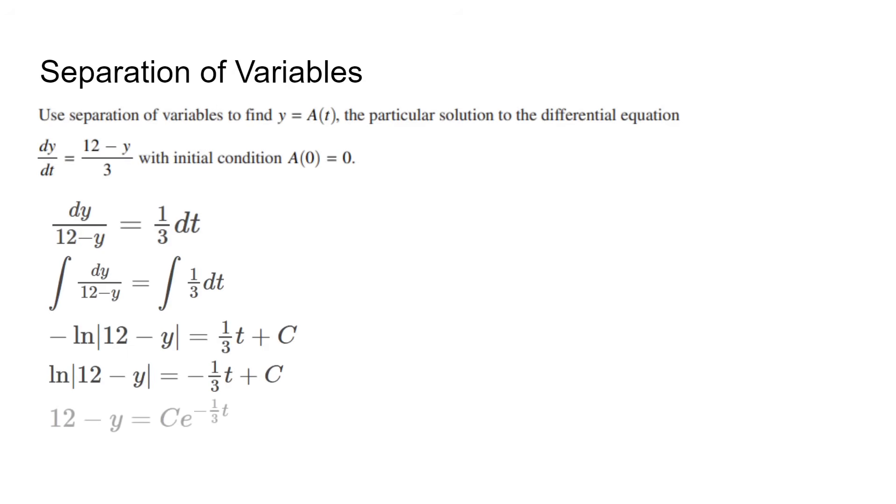We raise both sides to e to get rid of the ln, and using the properties, c can be brought to the front. We get the general solution and plug in the initial condition to solve for the constant, and get our particular solution.